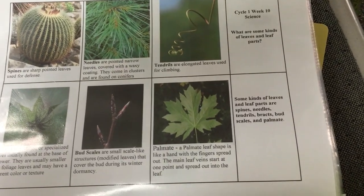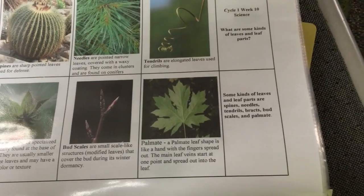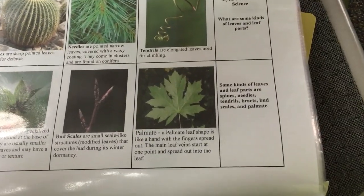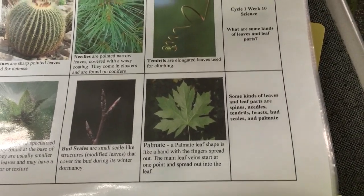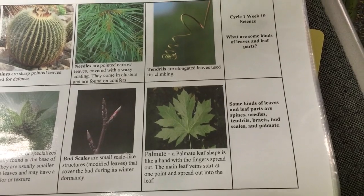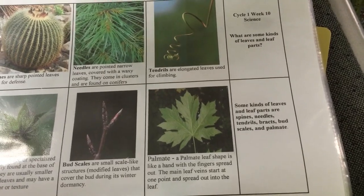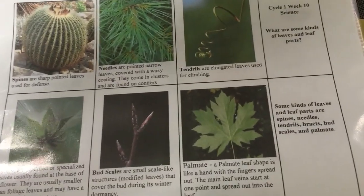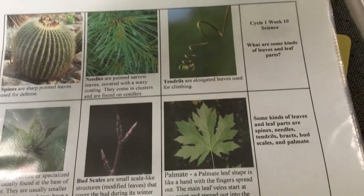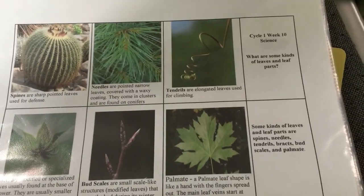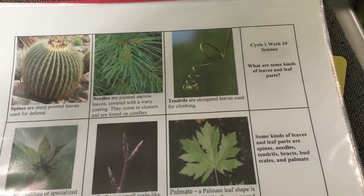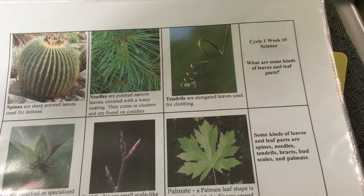Science week 10. What are some kinds of leaves and leaf parts? Some kinds of leaves and leaf parts are spines, needles, tendrils, bracts, and bud scales.